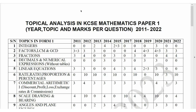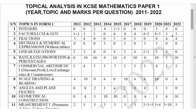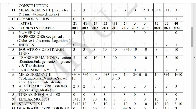Welcome. Let me take you through the topical analysis in KCSE Mathematics Paper 1. Let us look at the topics that are under Paper 1 and also the topics under Paper 2. From Form 1, most topics come in Paper 1 — integers, fractions, and all those Form 1 topics. Form 2 topics include reciprocal cubes, logarithms, indices, equation of a straight line, transformation, reflection, rotation, congruence — these all come in Paper 1 Mathematics.